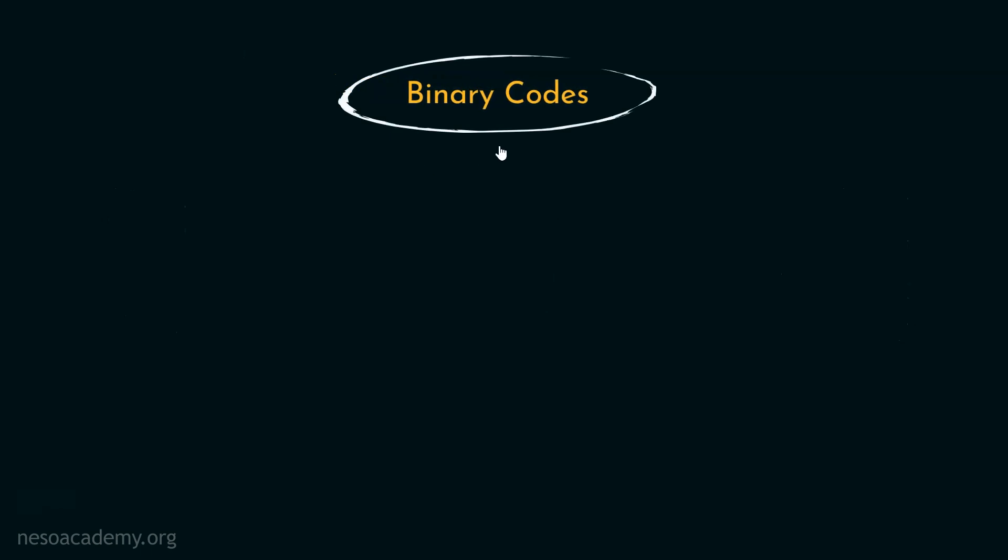Now, binary codes can be broadly classified into two different categories, the alphanumeric codes and the numeric codes.